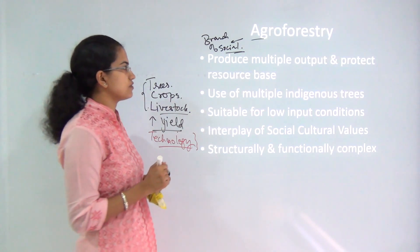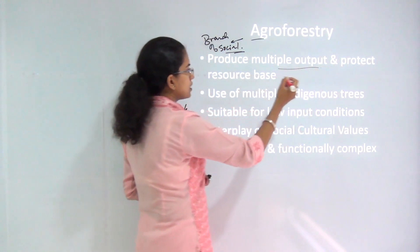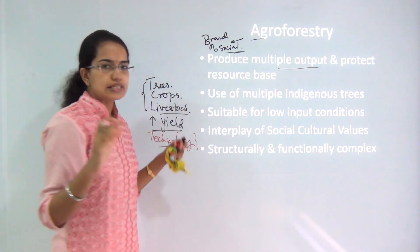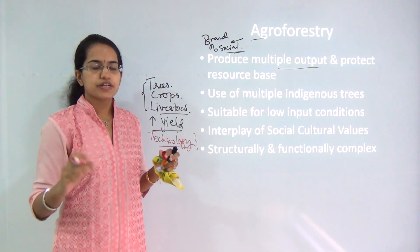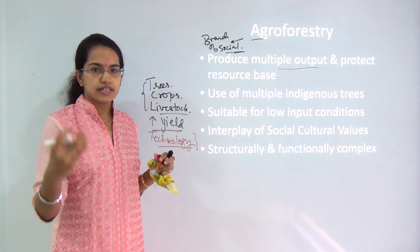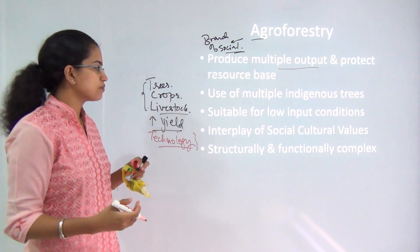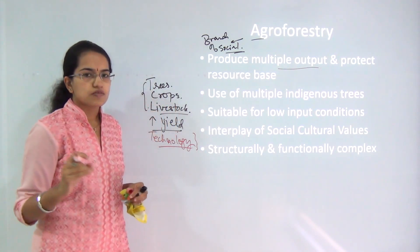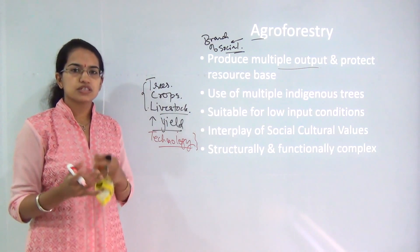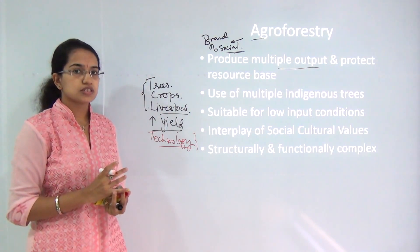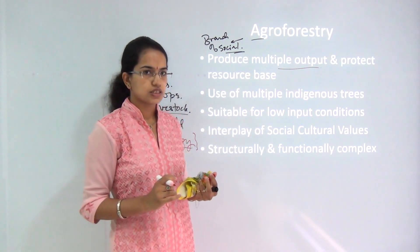Under agroforestry, we are also trying to produce maximum output and protect the existing resource base. We try to use as many indigenous species as we can. Most of the things that we are trying to use under social forestry and agroforestry must require low input conditions.